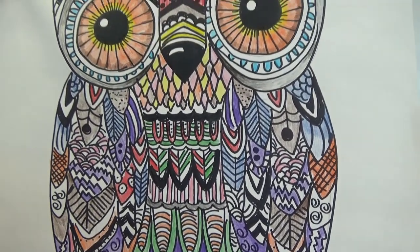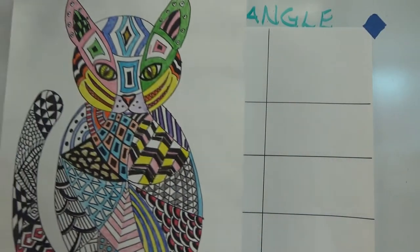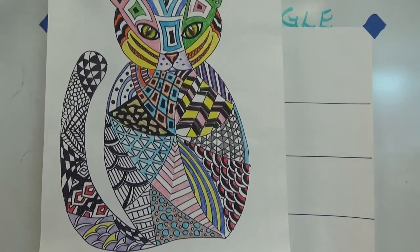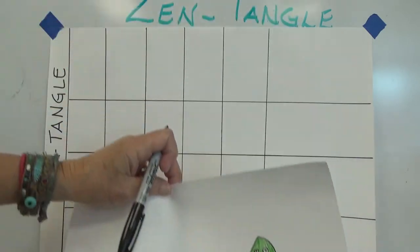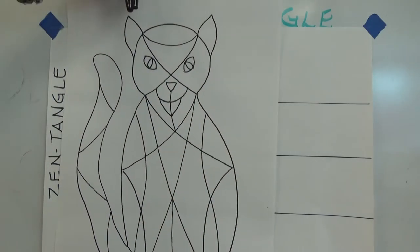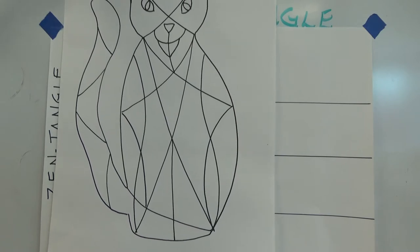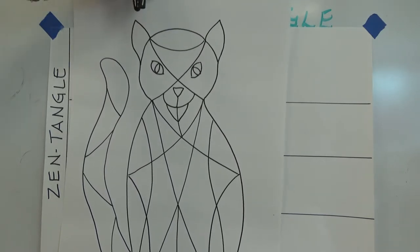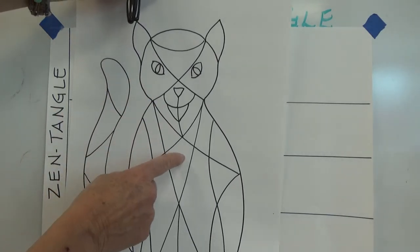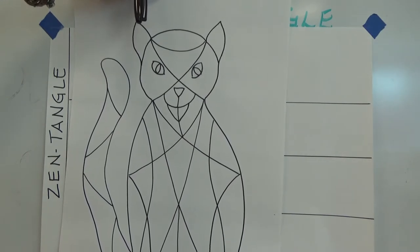Those are just designs repeated over and over again. Another one that we're going to be doing is going to be this cat. This is the one we're going to start with because it's going to be a simpler project. We're going to divide it into lots of different organic and geometric shapes, and then in each of these different shapes, we're going to create some different patterns called zentangle.